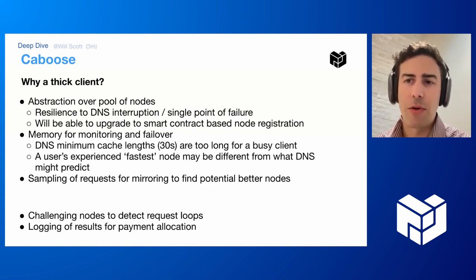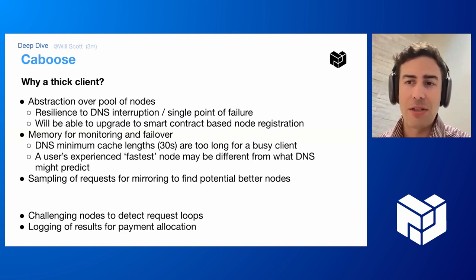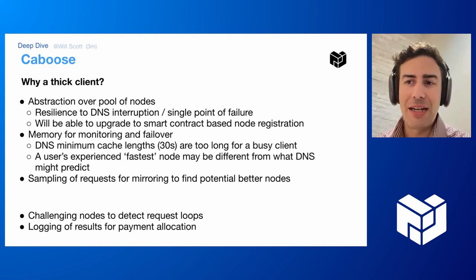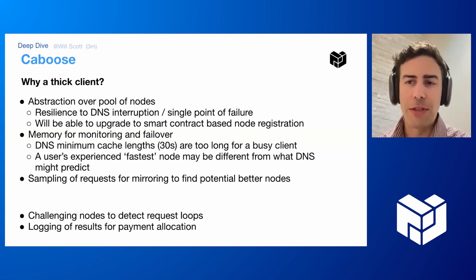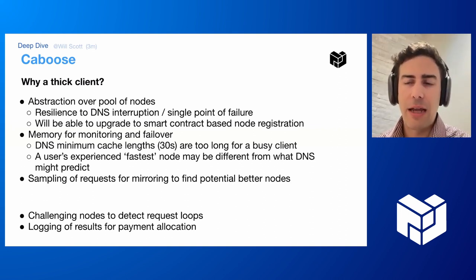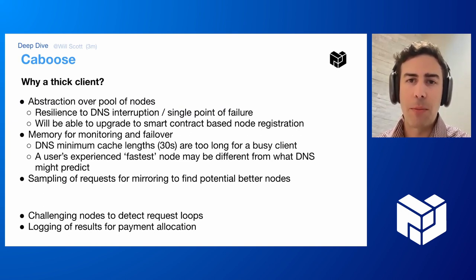Custom software can do better than a standard client. DNS doesn't always get you the fastest nodes — it gives you who the DNS server thinks is probably in your region. But by doing active measurements on each request, looking at how fast responses come back, we can have a much more realistic ranking of which nodes are actually performing well for us.